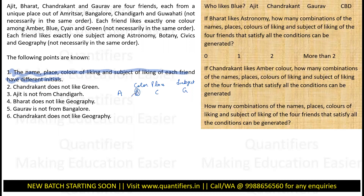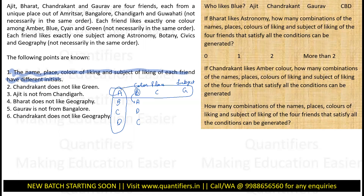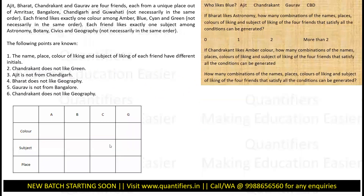Once a color is allocated to someone, it cannot be allocated to someone else. So if there is a person B, B will not repeat. Each column will have all the entries of A, B, C, D and each row will have all the entries of A, B, C, D. So basically it is more or less a sudoku-type set, and to solve a sudoku-type set, we make a matrix. These are the small things you should sense when practicing.